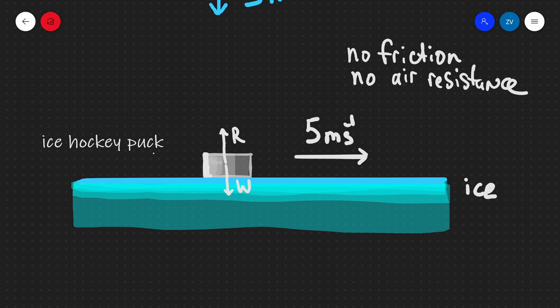But yet, the ice hockey puck is moving at constant velocity to the right, because this is the constant velocity that it was originally moving at.